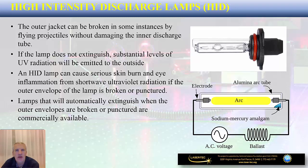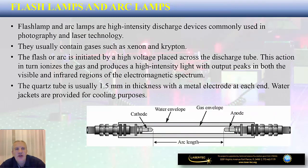Flash lamps and arc lamps are high-intensity discharge devices commonly used in photography and laser technology. They contain certain types of gases and their operation is based on a flash or arc initiated by high voltage across the discharge tube. Ionization of the gas produces high-intensity light with output peaks in both the visible and infrared regions of the electromagnetic spectrum. The quartz tubes are usually about 1.5 mm in thickness with a metal electrode at each end, and water jackets are sometimes provided for cooling.